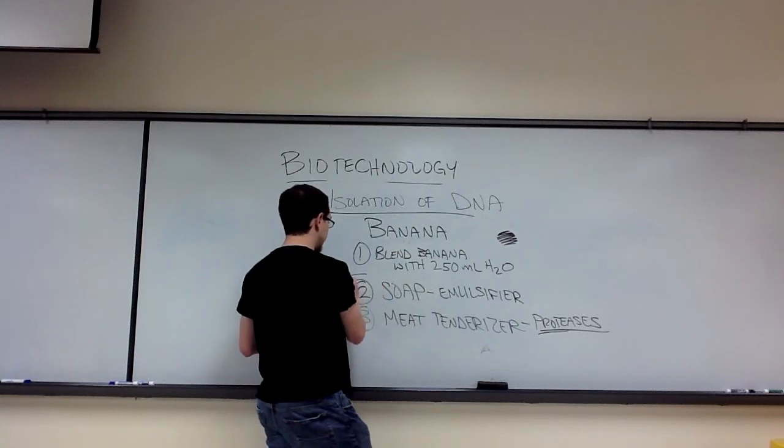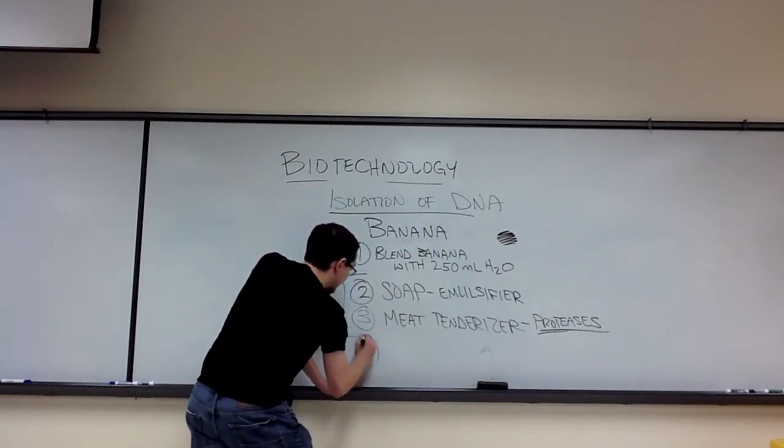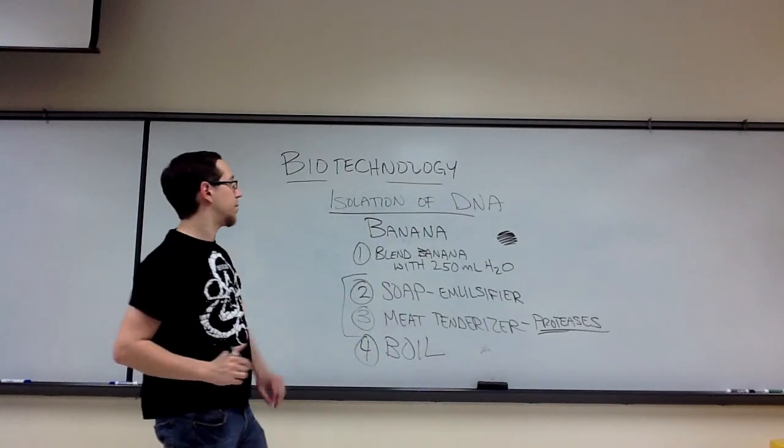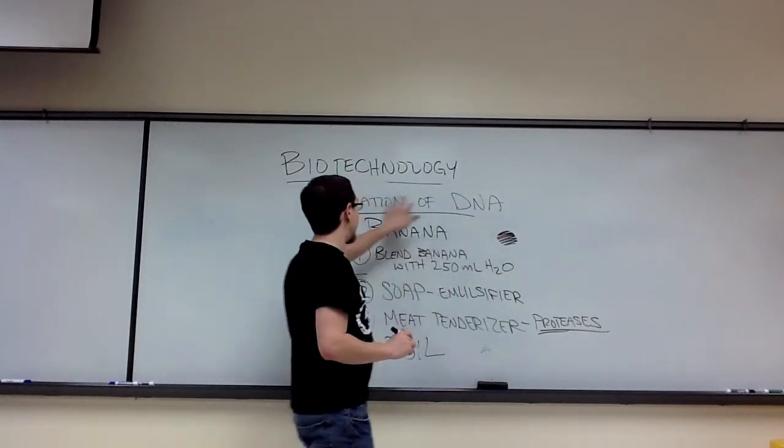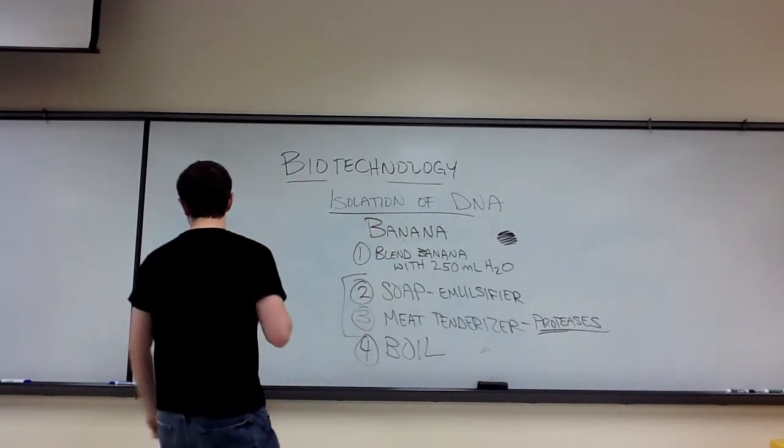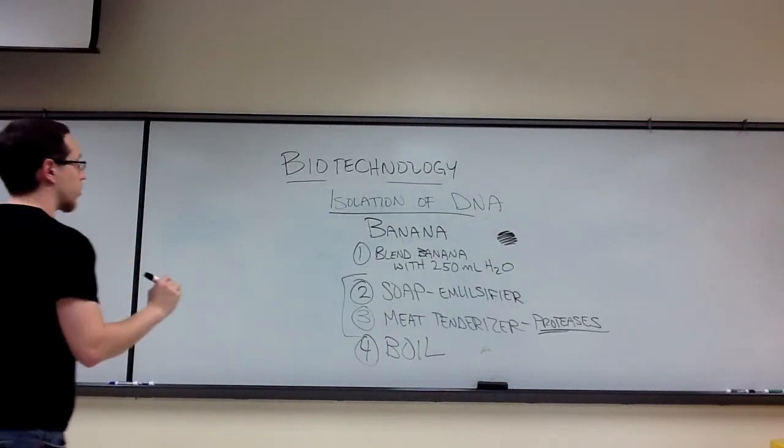So in theory, using these two solutions, along with the final component of heat, where we have to boil this, we should now be able to isolate the DNA from the rest of the banana. But there's one final step that we actually have to perform after this.